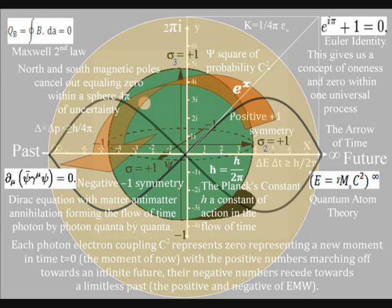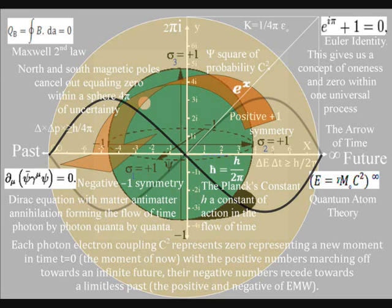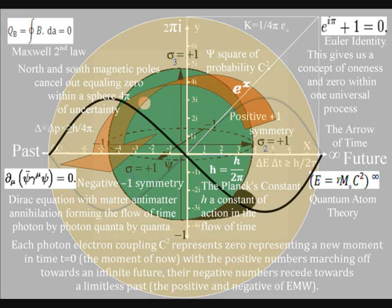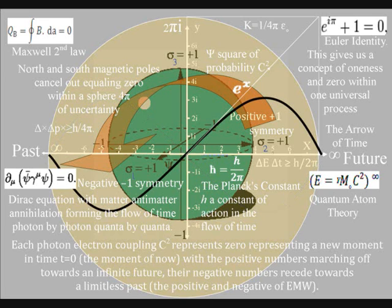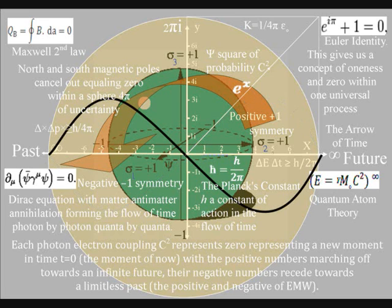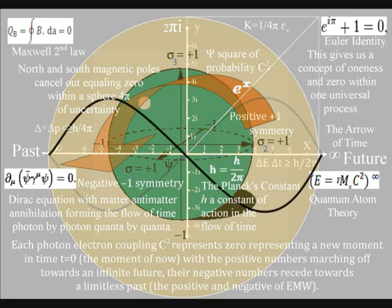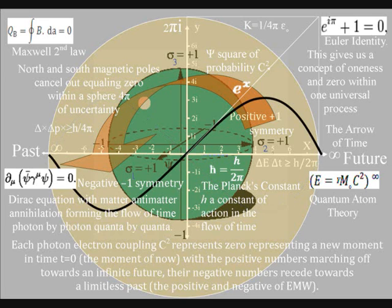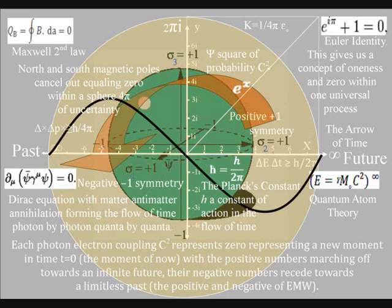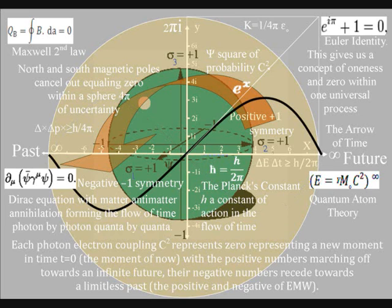The 0 represents zero time, or t equals 0, the moment of now — formed by light interacting with matter — with the positive numbers marching off forming a potential future with a square of probability, and the negative numbers receding towards a limitless past, representing the positive and negative of electromagnetic waves. In the top left hand corner we have Maxwell's second law with north and south magnetic poles cancelling out equalling 0 within a sphere of uncertainty, forming the continuous flow of electric charge with the movement of electromagnetic fields. The electric fields will always be at right angles to the magnetic fields because the momentum of light will always be at right angles to the surface of the sphere, represented on the diagram by the imaginary numbers being at right angles to the real numbers.